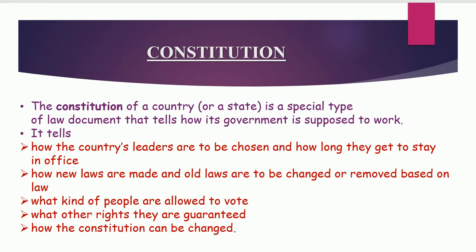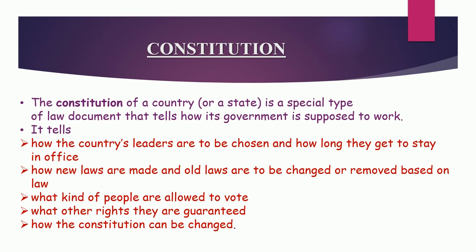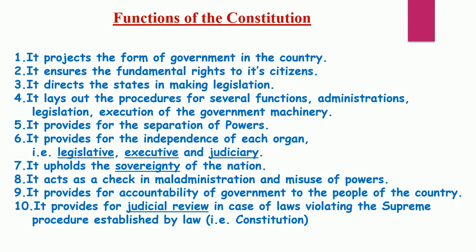Now, if there is a constitution, there must be certain functions of a constitution. The first function is that it projects the form of government in the country. A constitution has great importance in having a form of government. It is because of the constitution that there are different types of government in each country. For example, you have already read about the forms of government - democratic, authoritarian, unitary, federal, presidential, parliamentary. Everything depends on the constitution. And as already said, the constitution guarantees the citizens with certain rights.